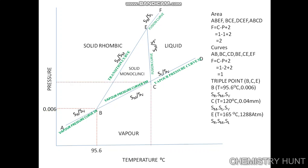The second triple point is C, where the pressure is 0.004 mm and the temperature is 120 degrees Celsius. At this point, sulphur monoclinic is in equilibrium with sulphur liquid, which is in equilibrium with sulphur vapour. These three phases can coexist only at 120°C and 0.004 mm pressure.